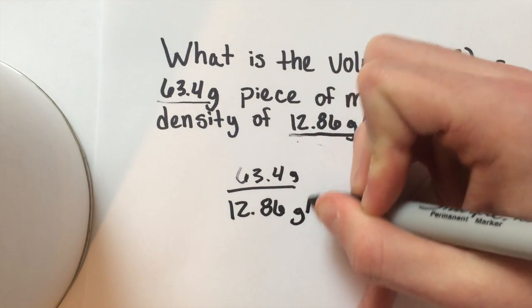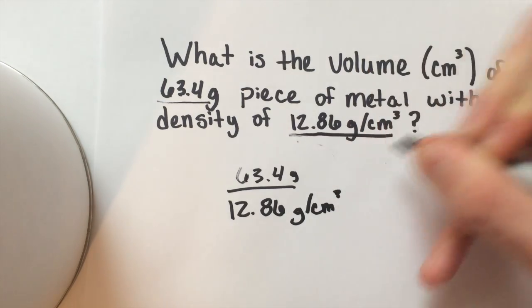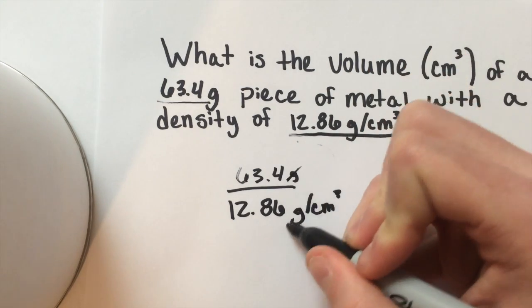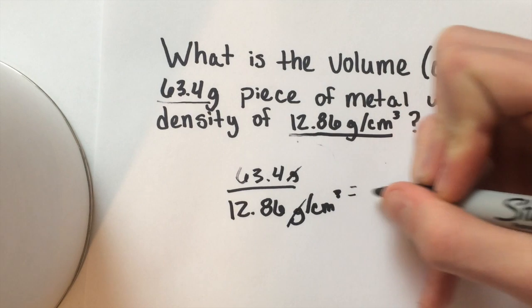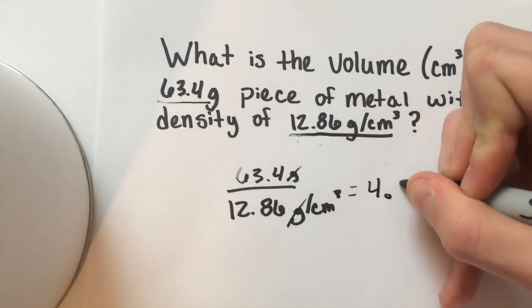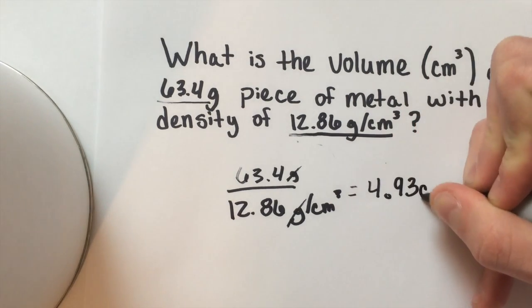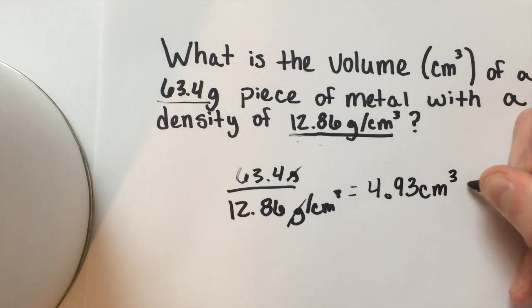Make sure you get your units in there. Centimeters cubed. Your grams will cancel. And you are left with 4.93 centimeters cubed for your volume.